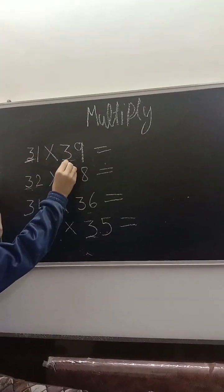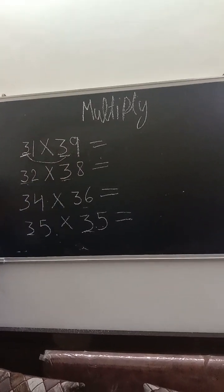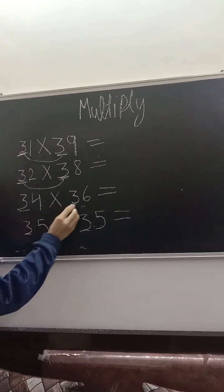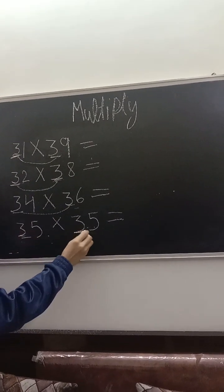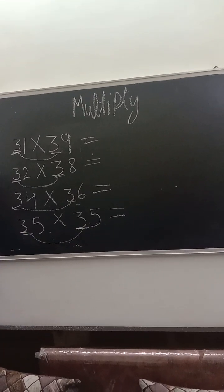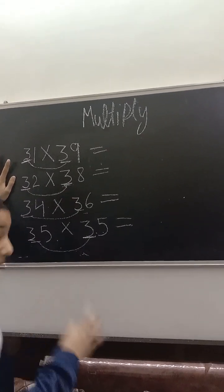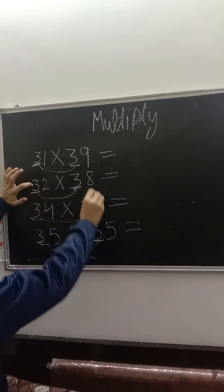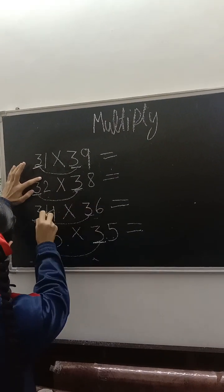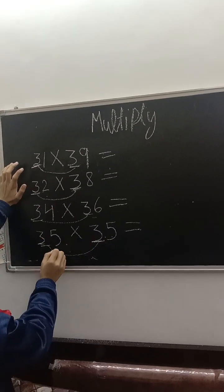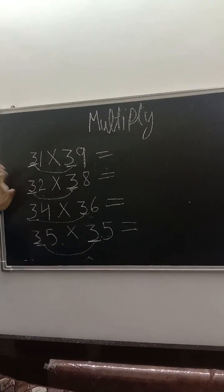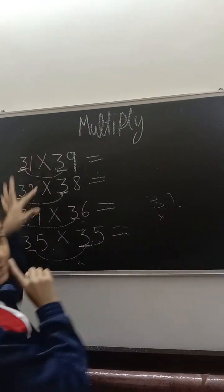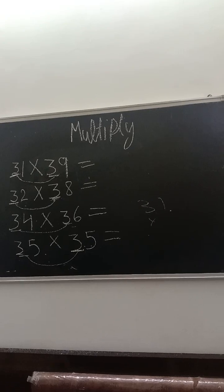31 times 39. We don't do the traditional method of 1008 plus 216 plus 410 and 550. We don't do this. We do easy tricks.